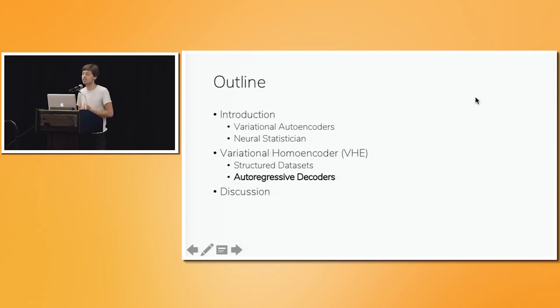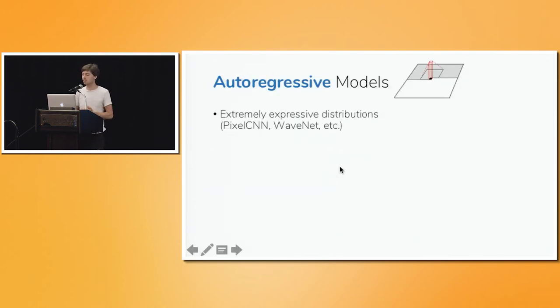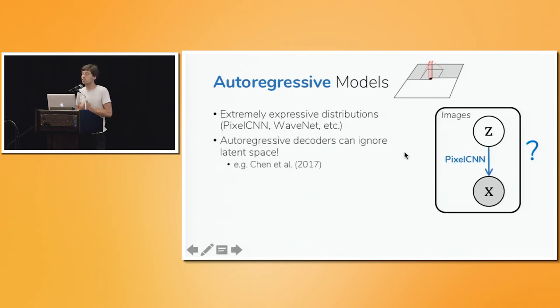And it turns out that variational homoencoders are also very good for this, for training generative models that use very expressive functions like autoregressive networks as decoders. So just to back up, autoregressive models are expressive distributions for modeling data with some kind of sequential structure to it. For example, a WaveNet is a neural network that generates sound waves one sample at a time. And a PixelCNN is a neural network that generates images one pixel at a time. And this means that PixelCNNs can be very good at modeling complex distributions over natural images, which suggests they'd be perfect to use as the renderer in a latent variable model. But unfortunately, this is much harder to get working than you might expect. PixelCNNs are actually too powerful, and they're so good at modeling complex data distributions that they don't need to rely on latent variables to capture most of the structure in the dataset. And this often leads to latent variable models which are degenerate. They become unconditional with a likelihood that's completely independent of the sampled latent variable.